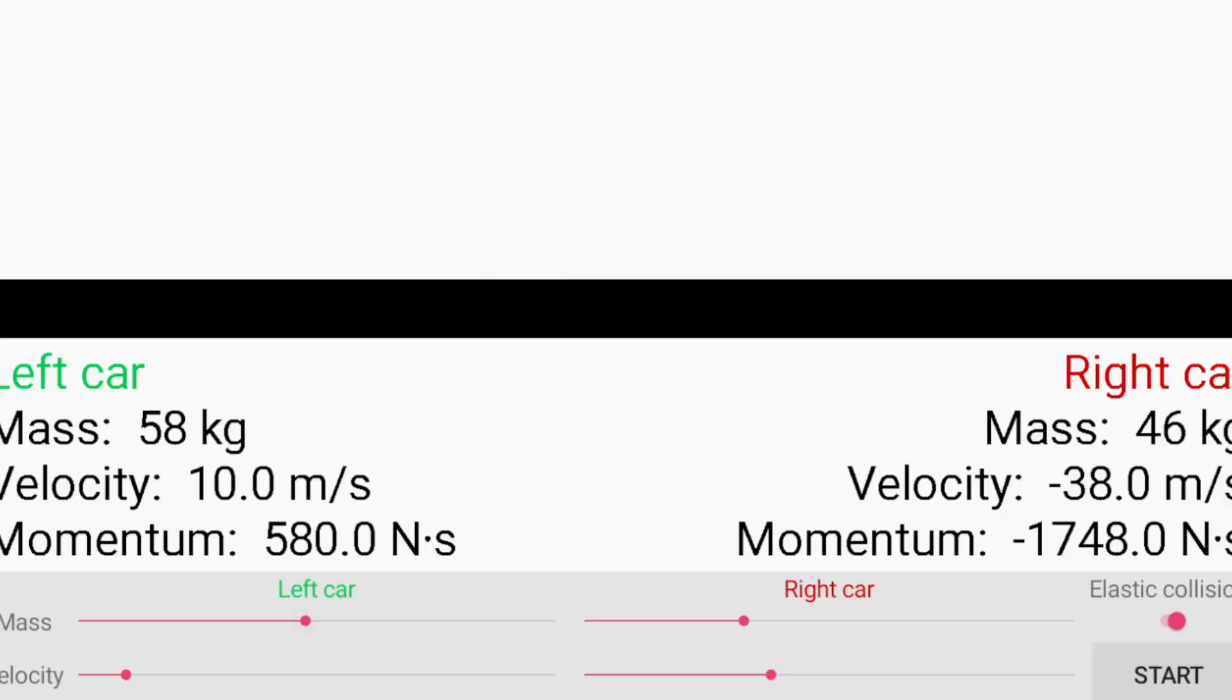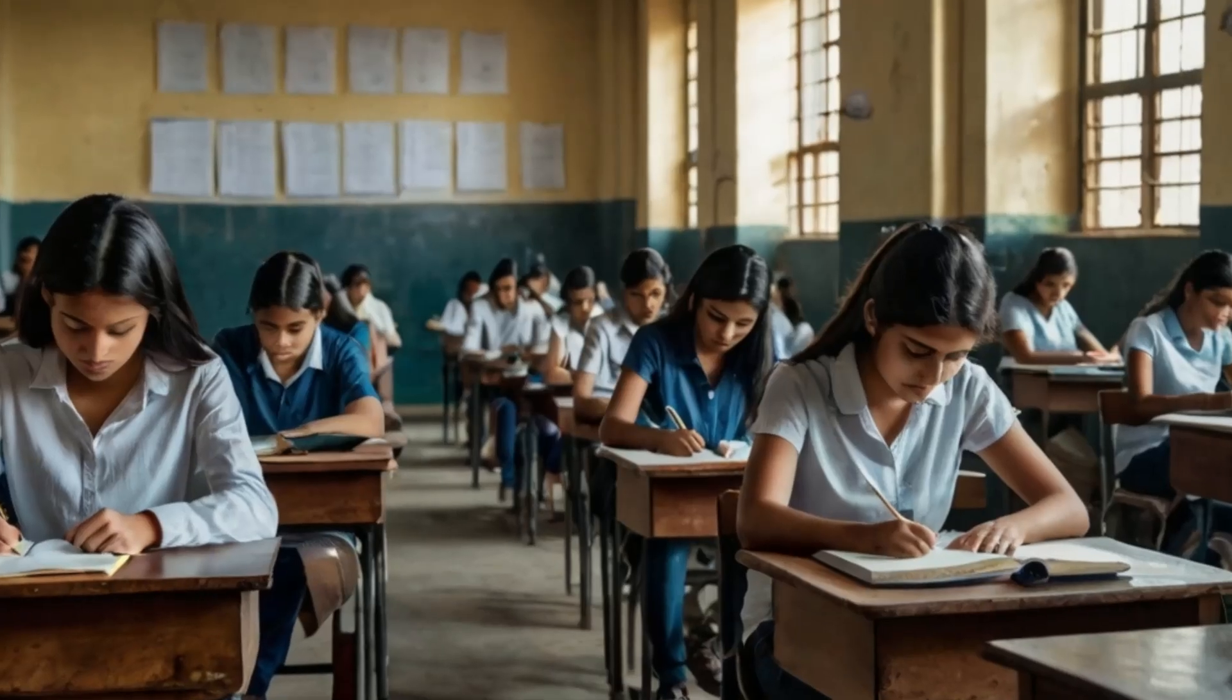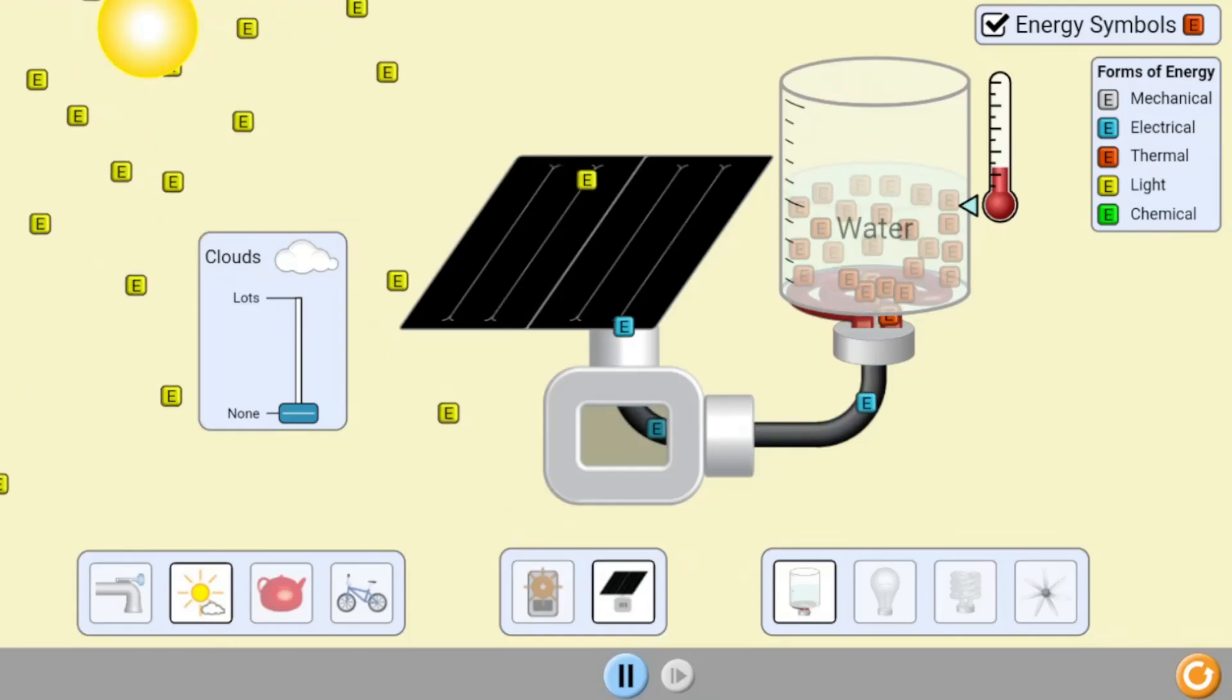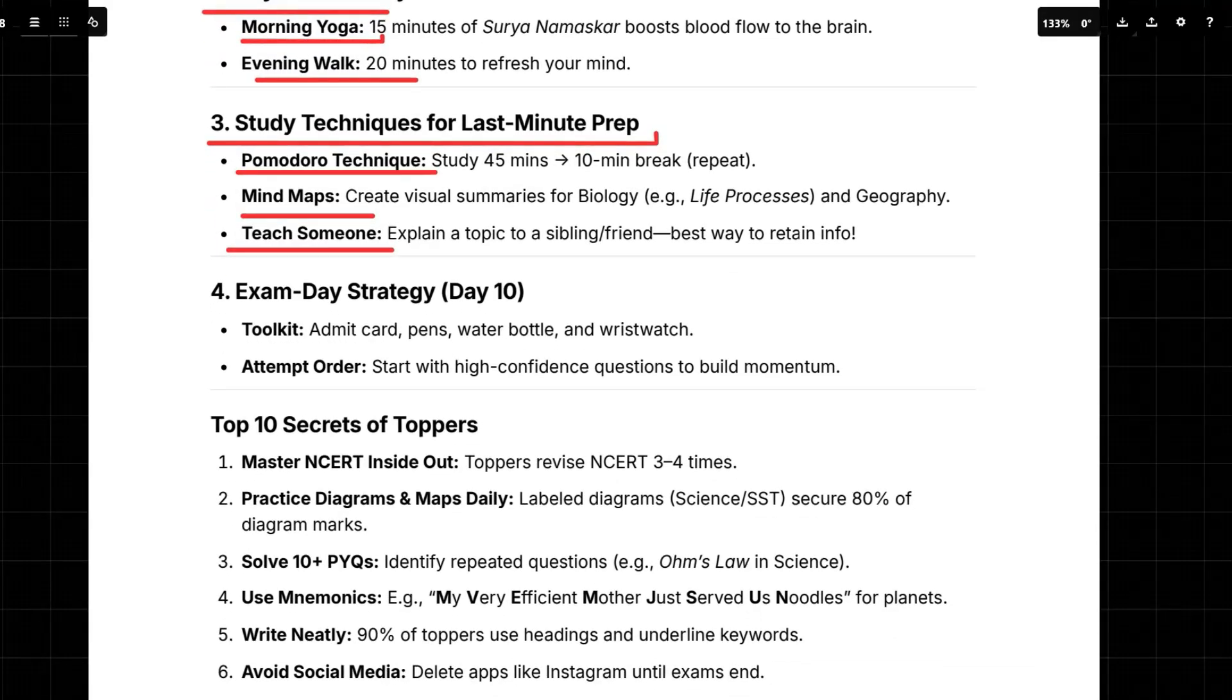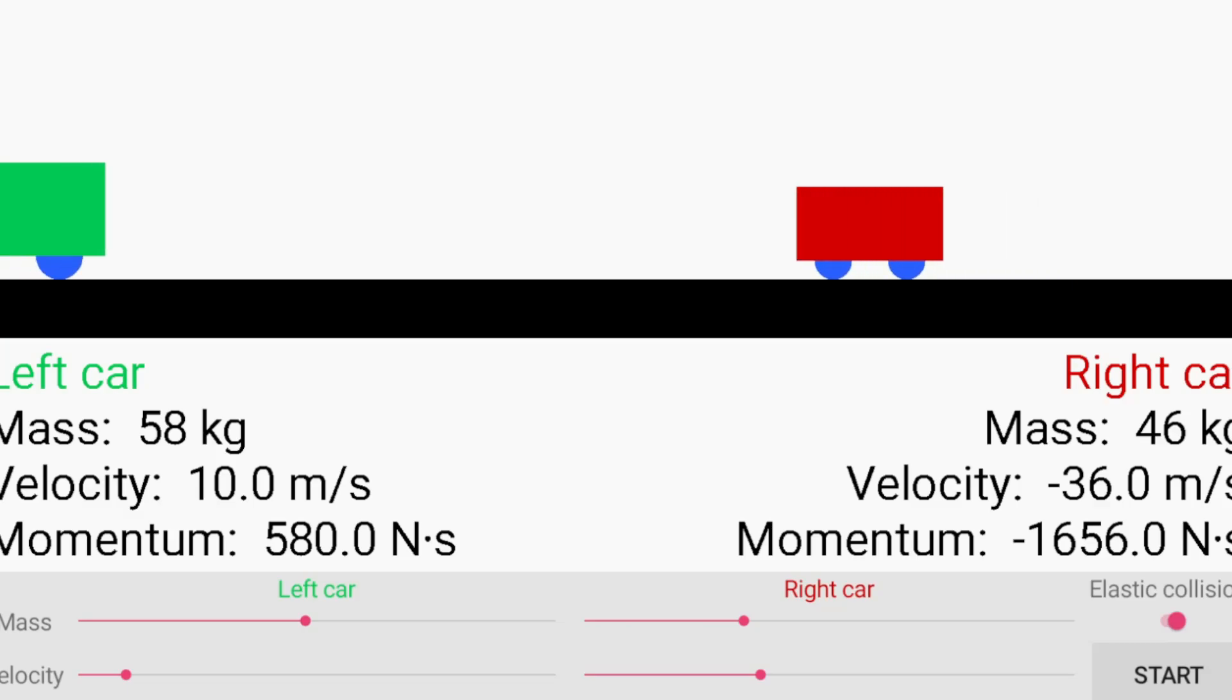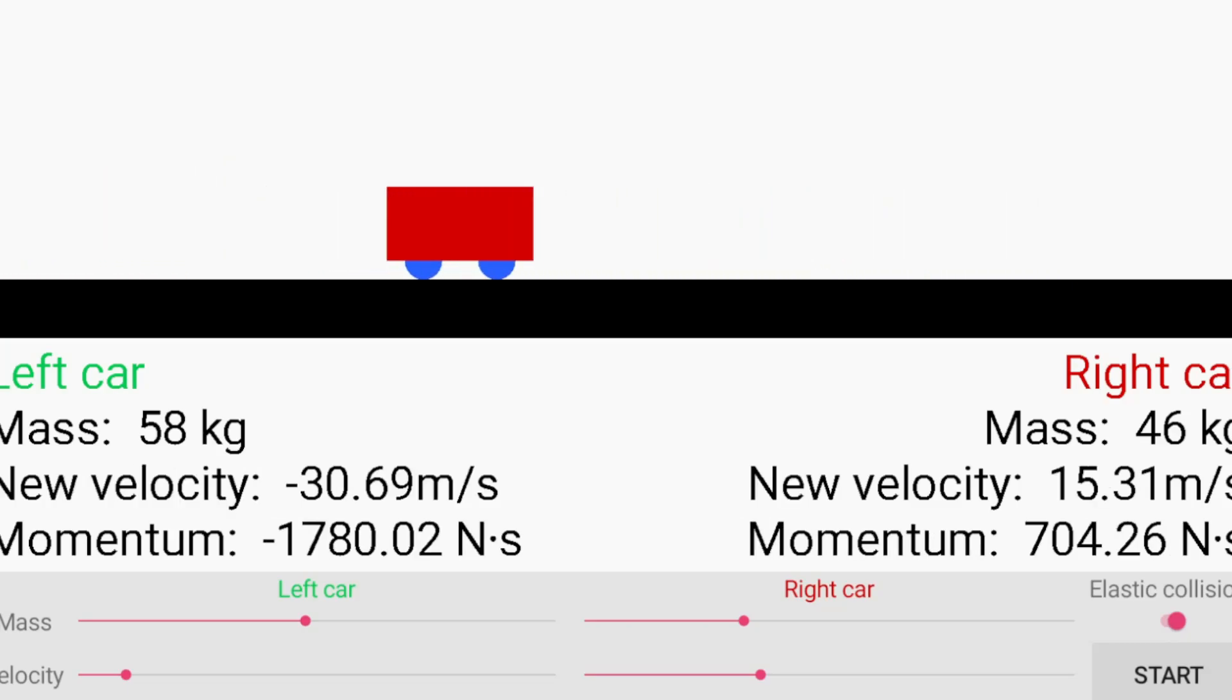Also tell me how the students should prepare for the exam day. Like what they should be doing on the exact day of the exam. Absolutely, that's a crucial part of the plan. Let's talk about exam day itself. It's like all that preparation comes down to this one day. So how you approach it really matters. So the first thing they mention is having a toolkit like your admit card and pens. And you've got to have a water bottle and a watch for the exam too. Don't forget those. It's all about being organized and ready. The plan also gives a good tip about how to attempt the paper. Yes, it says you should start with the questions you are most confident about. It's a great strategy for building up some momentum. And it helps you feel more in control. And that confidence can really help you with the harder questions. You know what else? They also mentioned mnemonics to remember key concepts. Oh yeah, like that planet one we talked about earlier. And of course, writing neatly using headings and keywords to make your answers stand out.